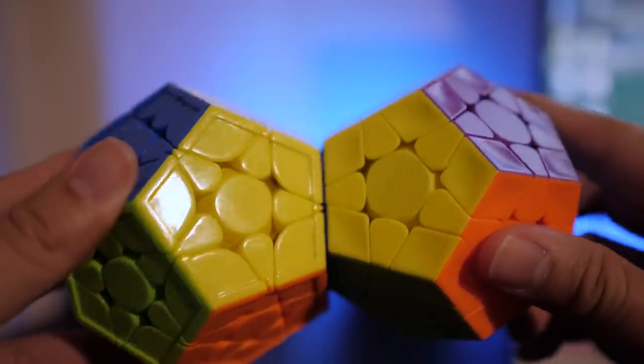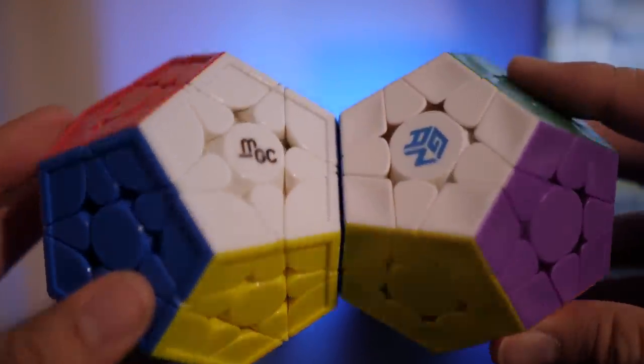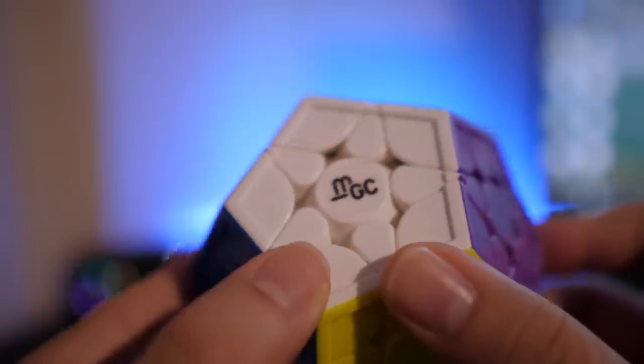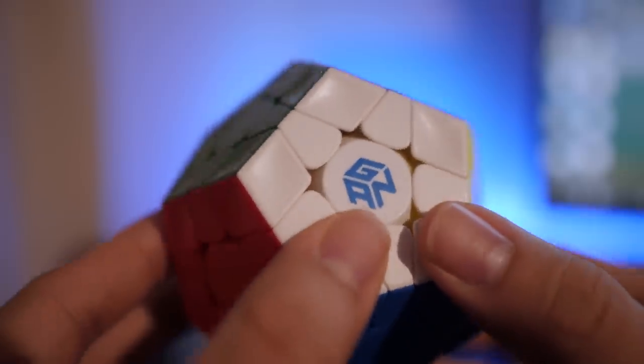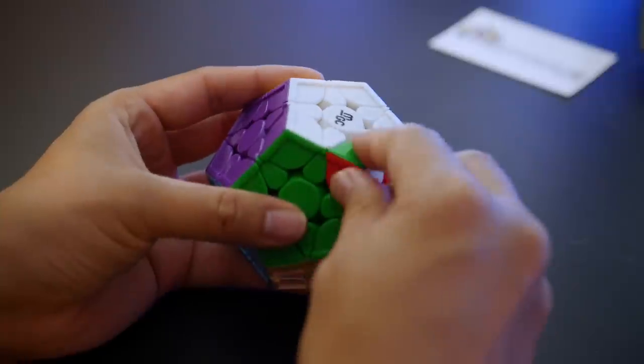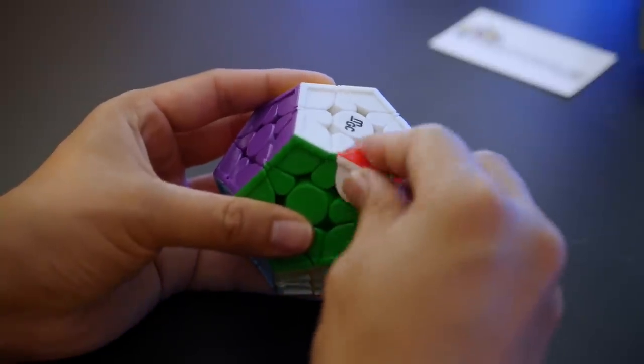But there were positives too. The wider edge pieces meant that I could spot them that bit quicker in solves. The lack of ridges made me feel like I could see adjacent colours a little bit easier. And not once did I get a corner twist, a problem I often had with the YJ MGC.